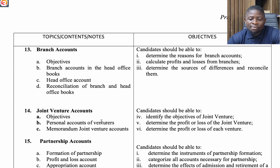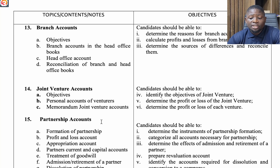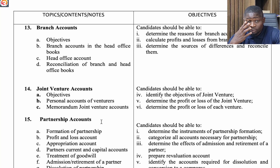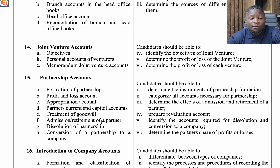The thirteenth topic is Branch Accounts. Look at objectives, branch accounts in the head office books, head office accounts, and reconciliation of branch and head office books. The fourteenth topic is Joint Venture Accounts — look at objectives, personal accounts of venturers, and memorandum joint venture accounts.